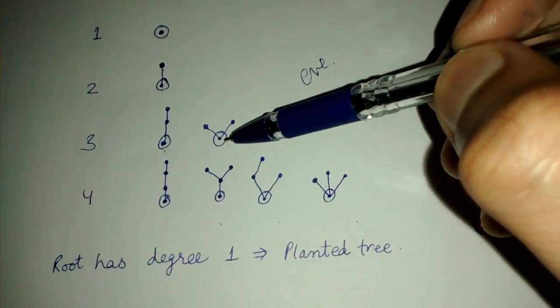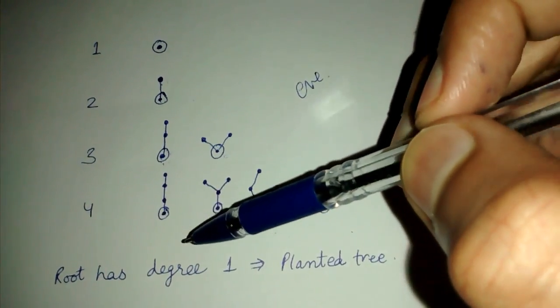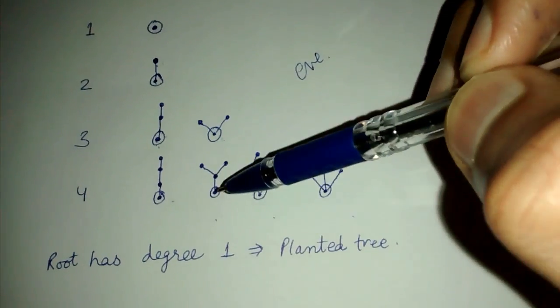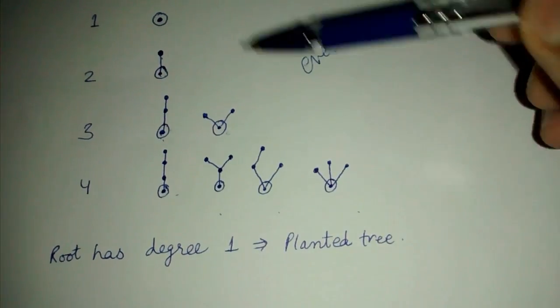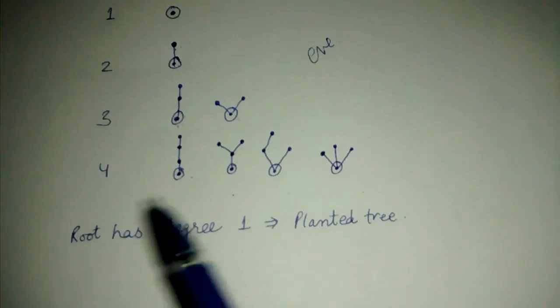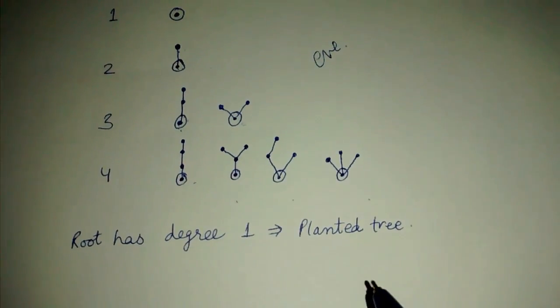This is not a planted tree because root has a degree of two. This is a planted tree, this is a planted tree, this and this are not, this is not. Okay, so this is the concept of planted tree.